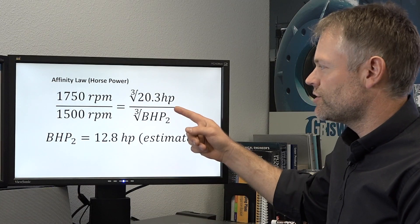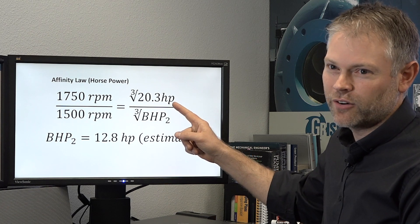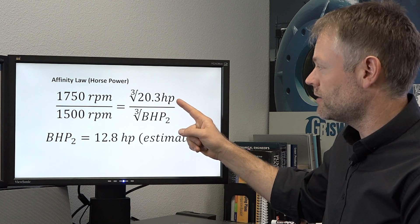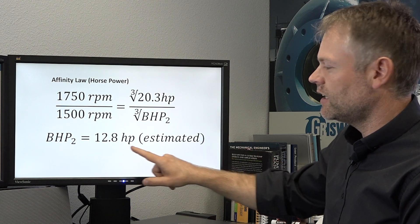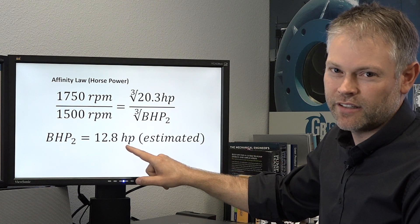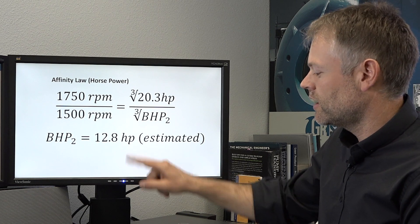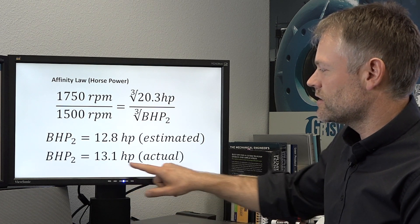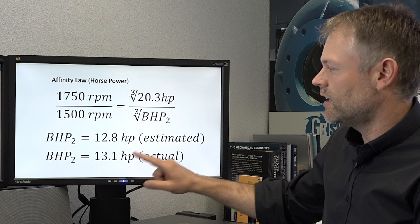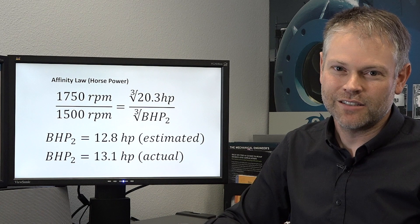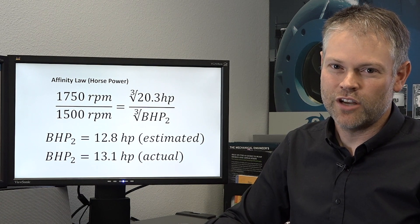Finally, let's look at what happened to the horsepower of the pump as it was operating. We started at 20.3 horsepower. The affinity laws would predict 12.8 horsepower performance, and in the test lab we saw that it was actually performing at 13.1. So again, the affinity laws did a very good job of estimating the performance change.